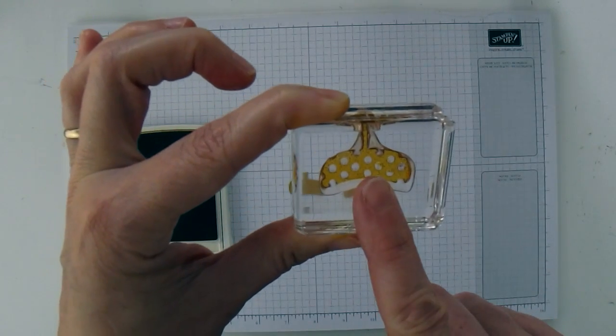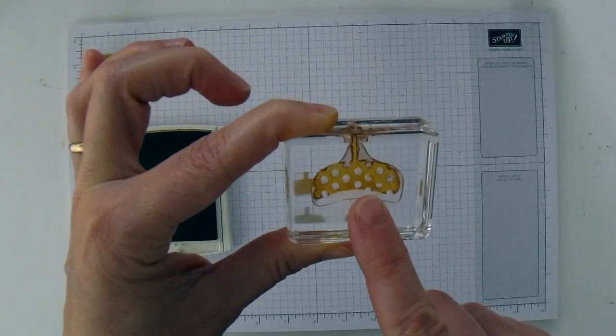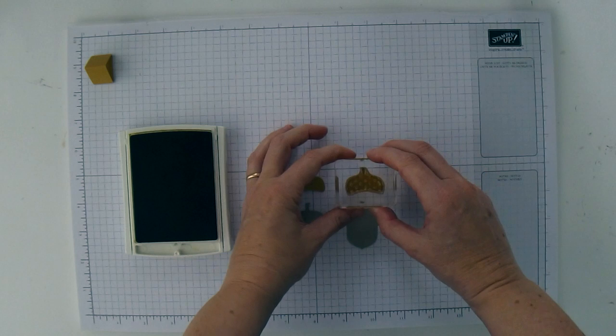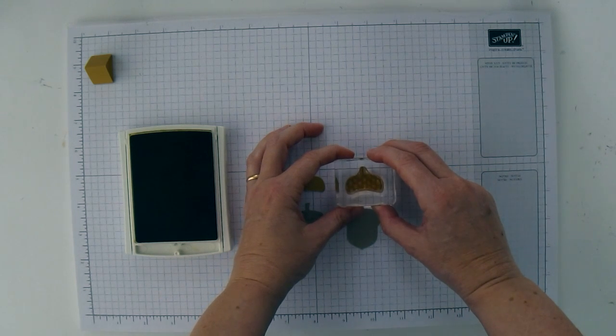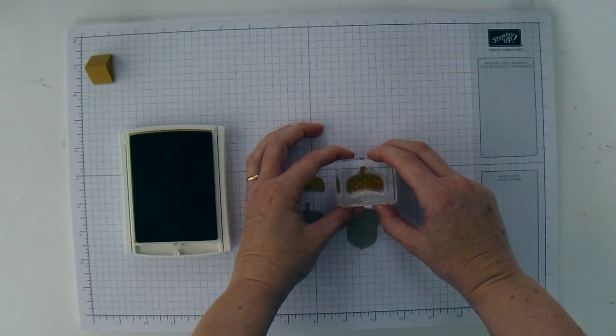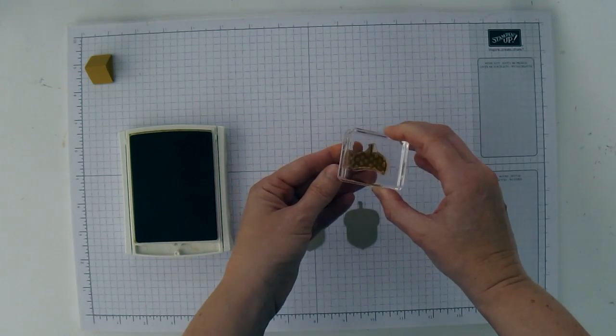So you can actually use this to stamp on both sides of the cap. So I'm just going to, because it's a see-through photopolymer stamp, I'm just going to line it up with my cap. And then once I've got it centered, I'm just going to stamp down.